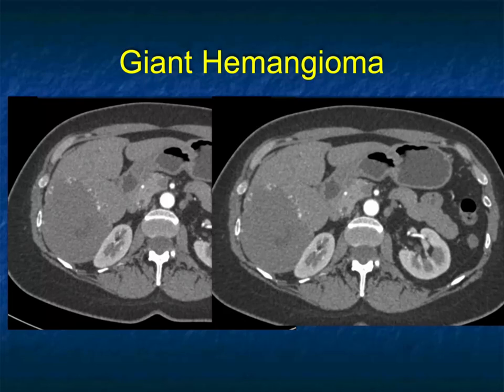It's important to remember that just because you have peripheral enhancement doesn't mean you're dealing with a hemangioma. You can see peripheral enhancement in many things, including metastasis and hepatoma, but it's the type of enhancement you see.